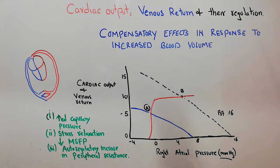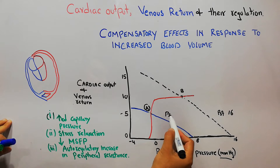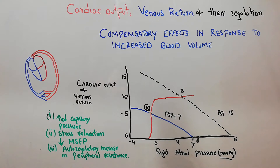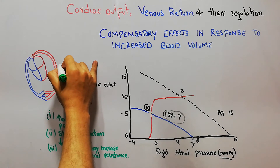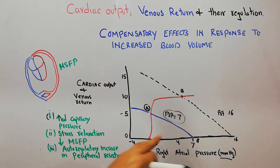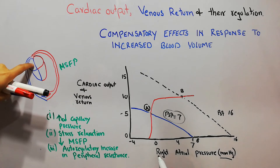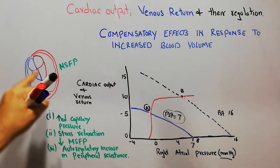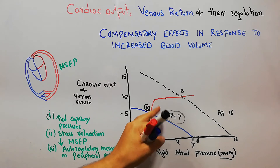At point A, the right atrial pressure is 0 mmHg and the mean systemic filling pressure is 7 mmHg. If the right atrial pressure starts increasing, the venous return will start decreasing and will become 0 when the right atrial pressure reaches 7 mmHg, because the mean systemic filling pressure — the pressure forcing blood toward the heart — is normally 7. When right atrial pressure also reaches 7, venous return becomes 0. As right atrial pressure increases, cardiac output initially rises but then plateaus.